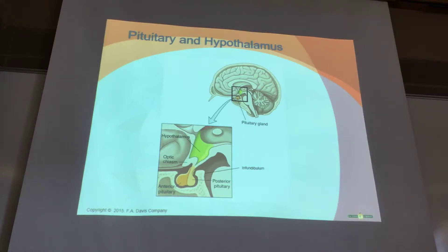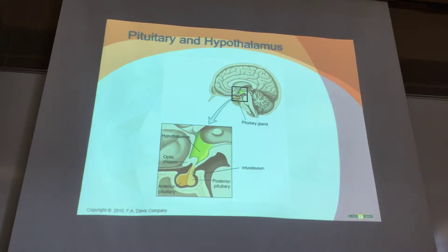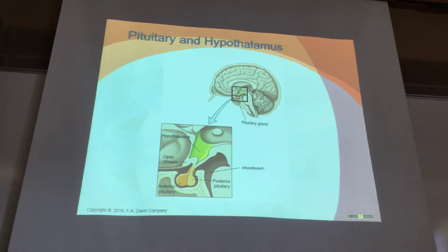The pituitary gland, along with the hypothalamus, influences more processes in the body than any other endocrine gland—they're a big deal. The pituitary gland is located just underneath the hypothalamus, in the diencephalon area of the brain, hanging right down below it. It sits in the sella turcica—that feature on your sphenoid bone that looks like a butterfly with a little pocket.